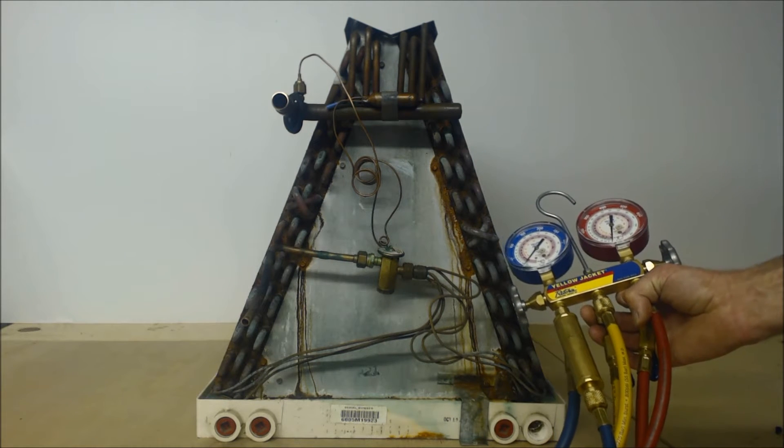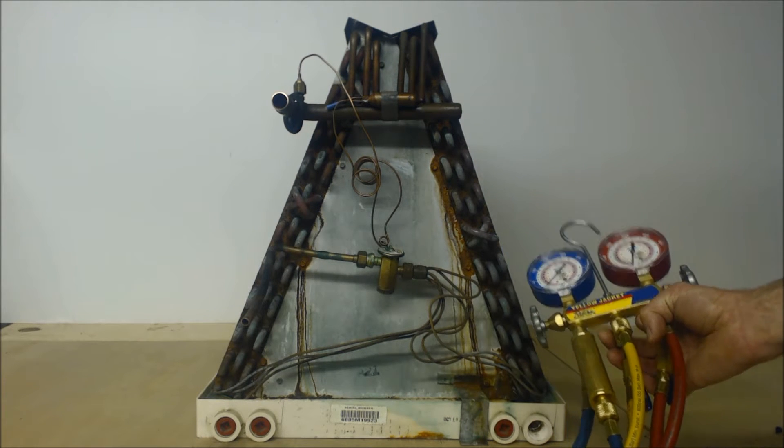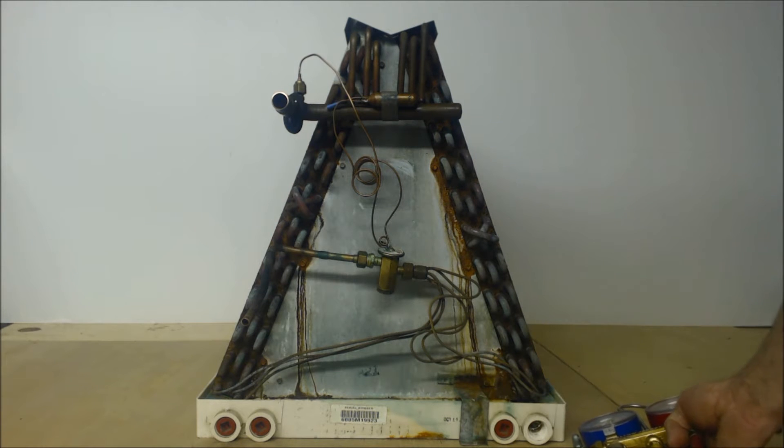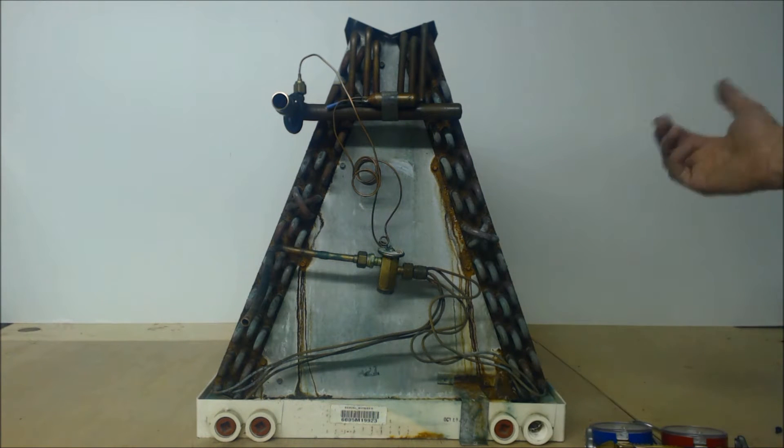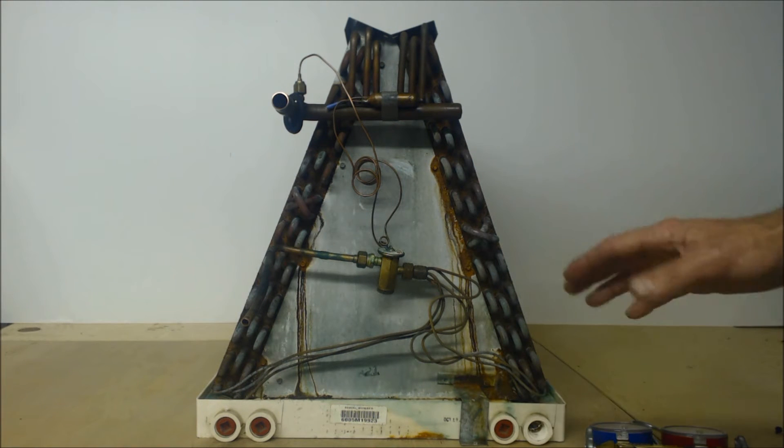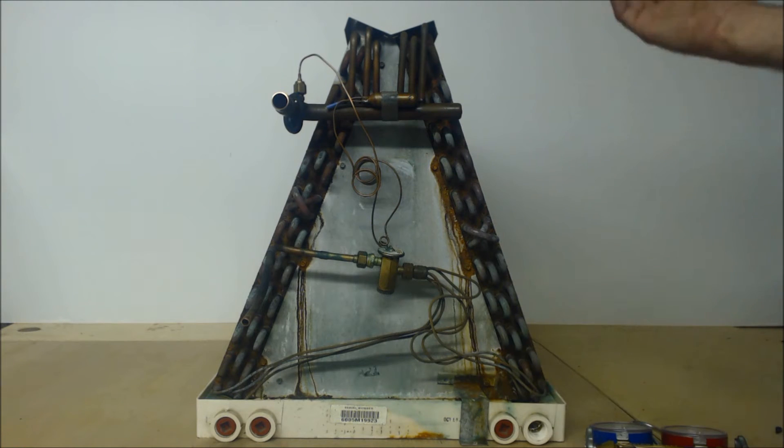So when you're attaching your gauge set up outside at the outdoor condenser or heat pump, or if you're attaching it to a geothermal unit, in cooling mode is when you're going to charge it and it needs to be at least 65 degrees, 70 degrees outside so there's a load on the inside of the house and the outside is within its normal working parameters of say 65 degrees or above.